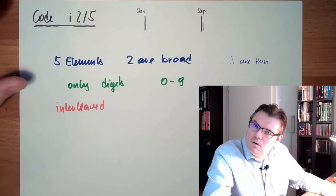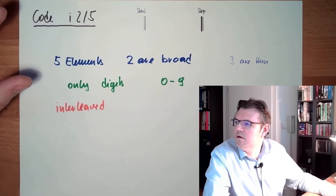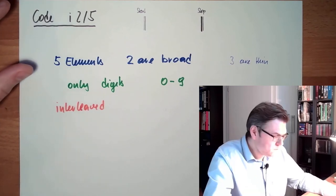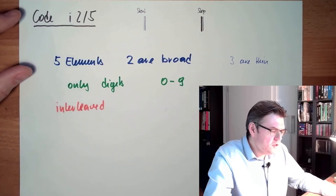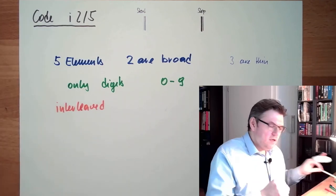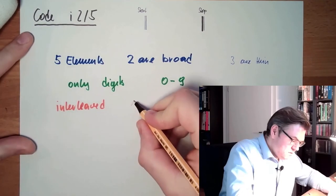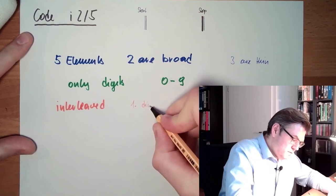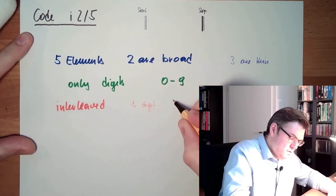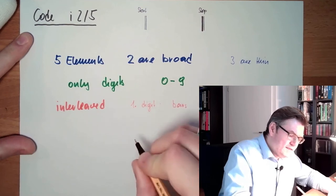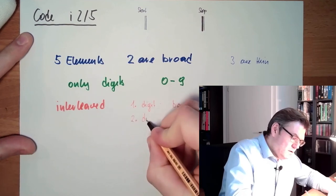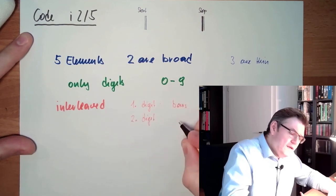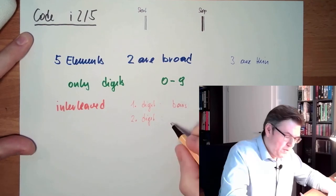Yeah, this would be a three. The first digit is done in bars. And the second digit is done in gaps between the bars.